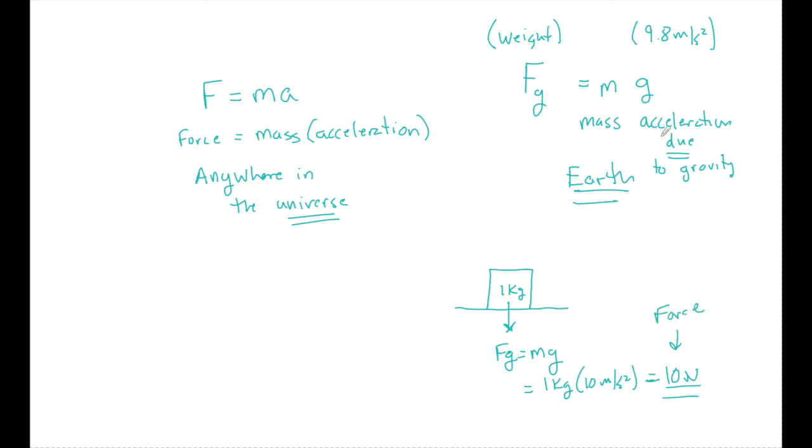Weight and mass are very different. Your mass is the same every single place in the universe, but your weight depends on this little g. You want to lose weight really fast? Head up to the moon. G is about one sixth, so your weight will be about one sixth what it is here on earth. So that's how we use it to find weight.